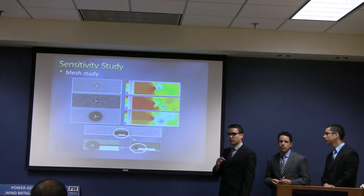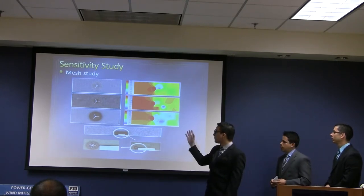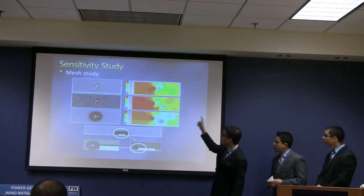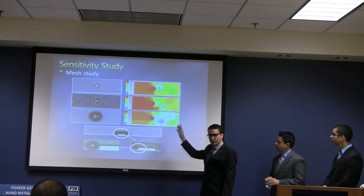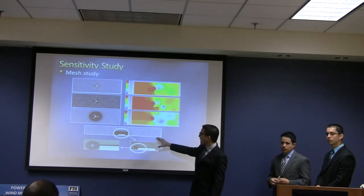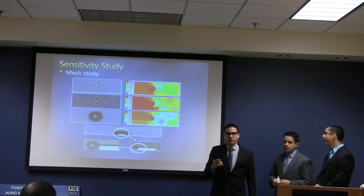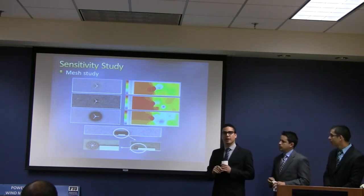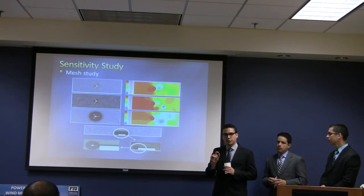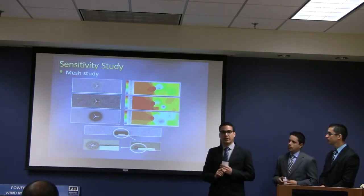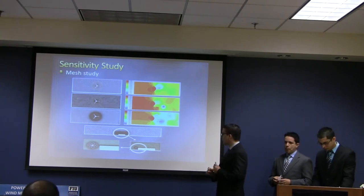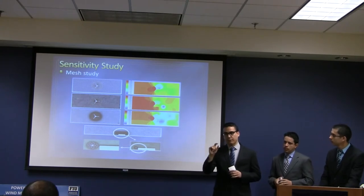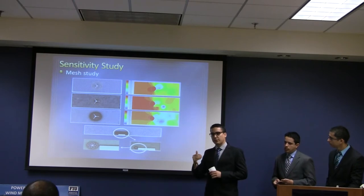We divided this sensitivity study into three parts. The first part was doing a mesh study. We learned three important things: one, the mesh around the turbine needs an element size at least as thick as the blade of the turbine; two, the triangular method is far more accurate than a square method when simulating turbulent flow; and three, we needed to use one-tenth of the thickness of the boundary layer for the mesh size, at least five millimeters from the edge of the roof.